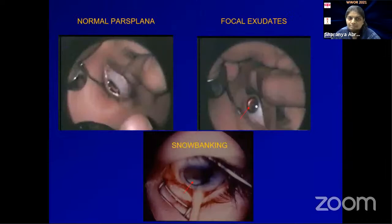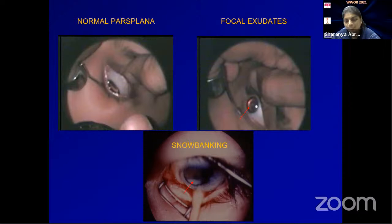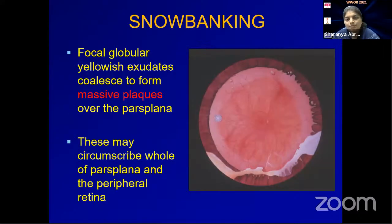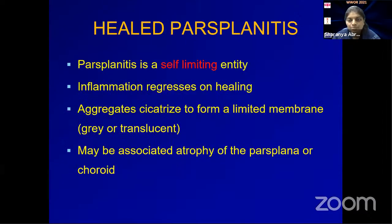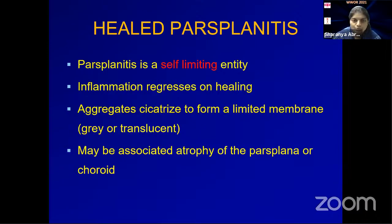Fundus examination techniques including scleral indentation are mandated; focal exudates and snowbanking may be seen. Snowbanking consists of focal globular yellowish exudates that coalesce to form massive plaques over the pars plana region, which may circumscribe the entire pars plana and peripheral retina. When they scar, they form a grayish or translucent membrane that can cause traction and may later be associated with pars plana or choroidal atrophy.